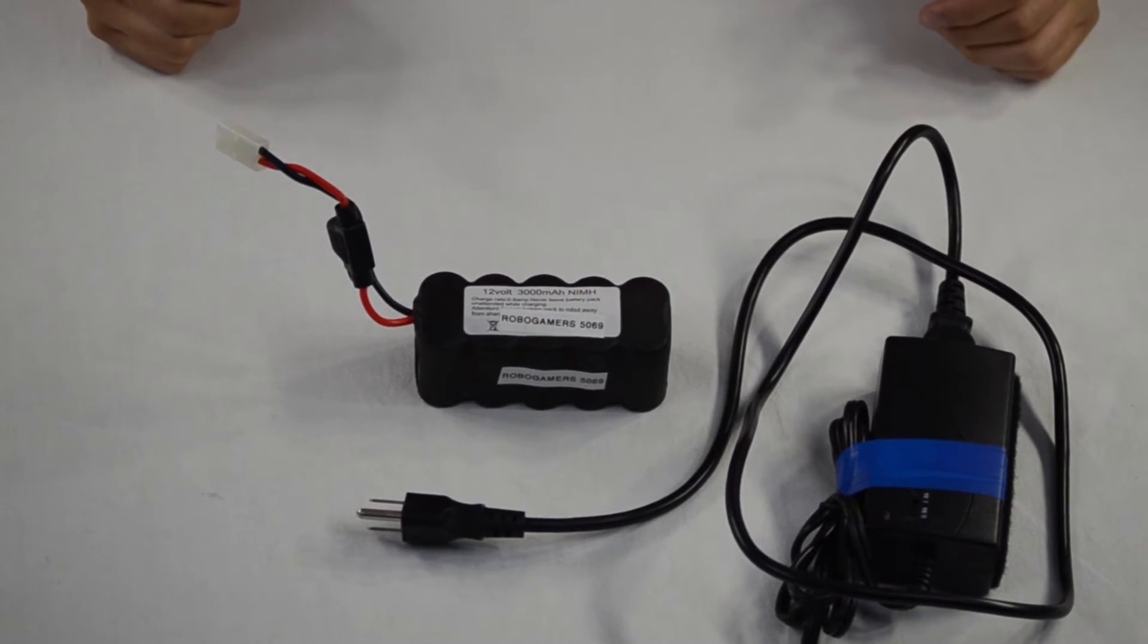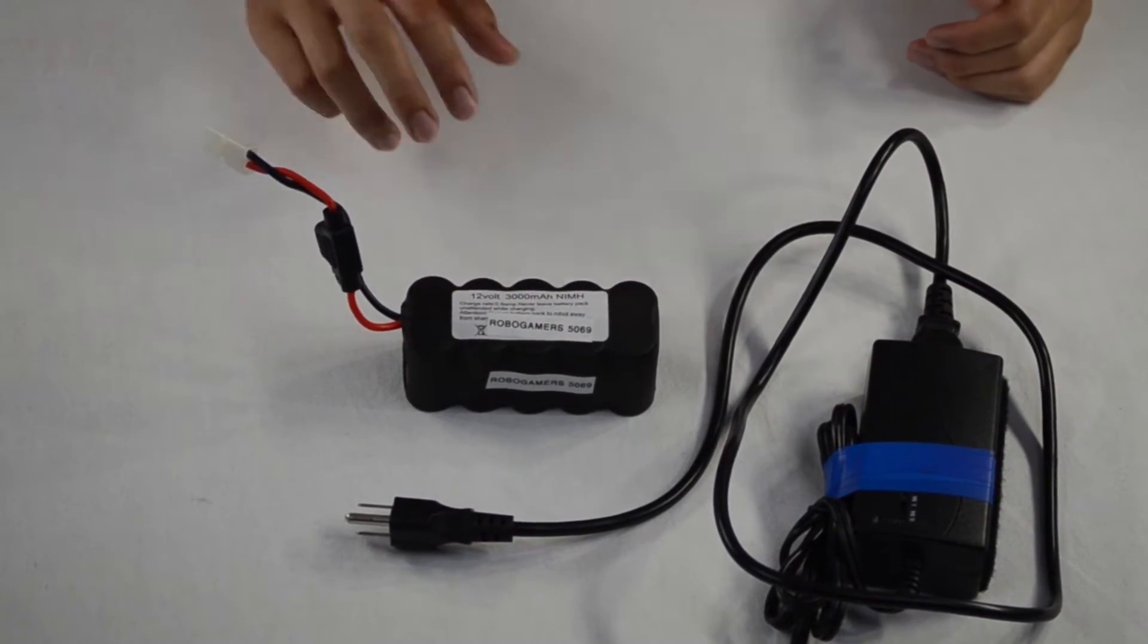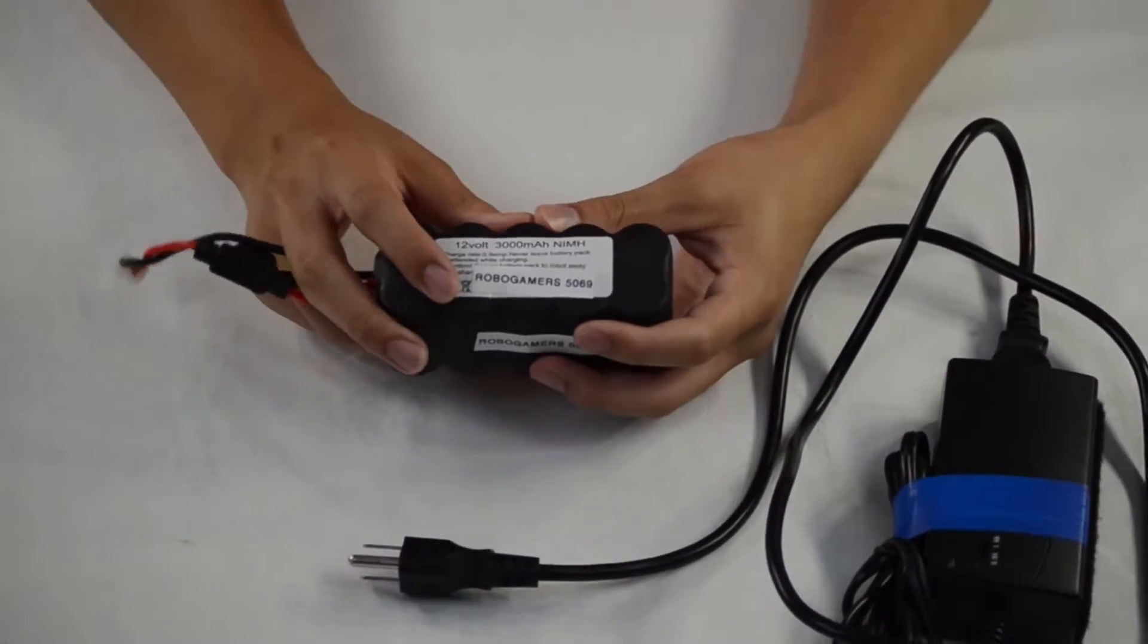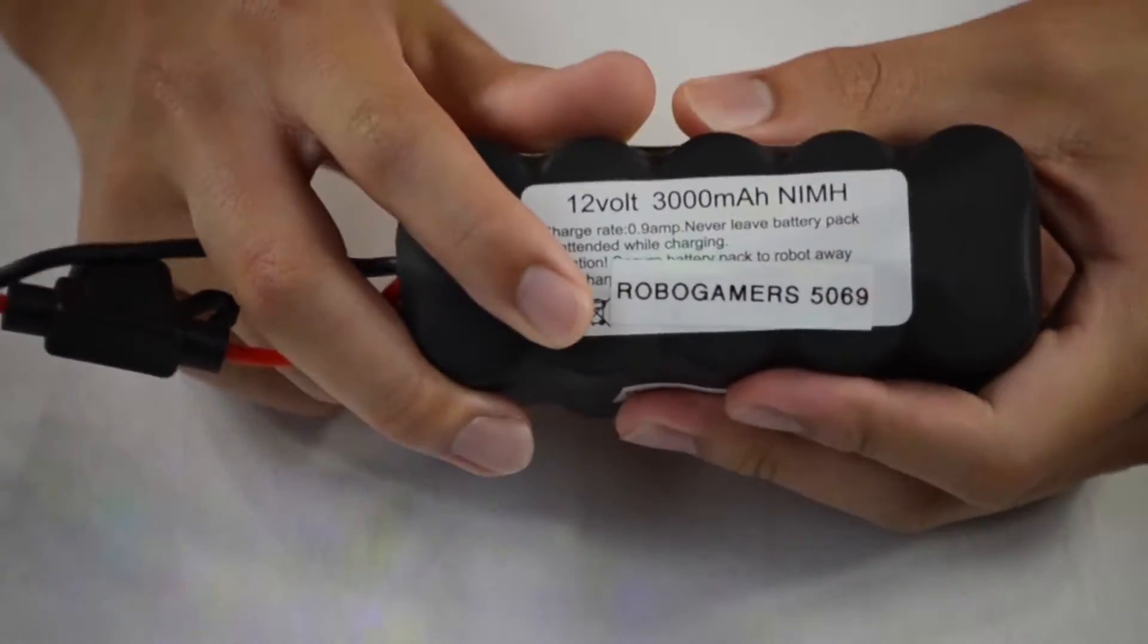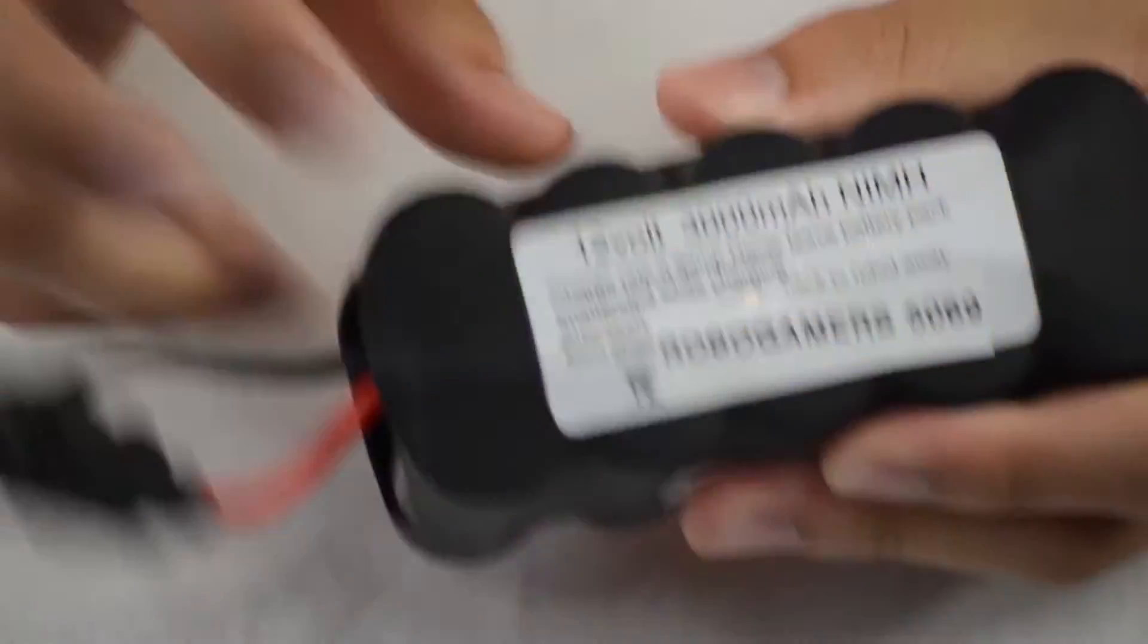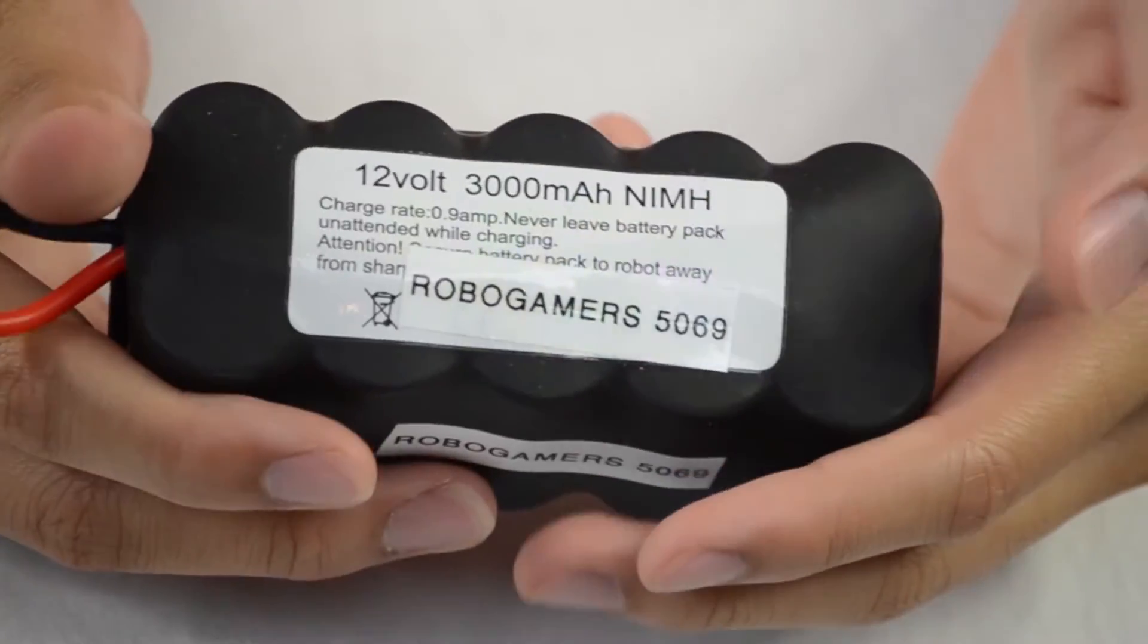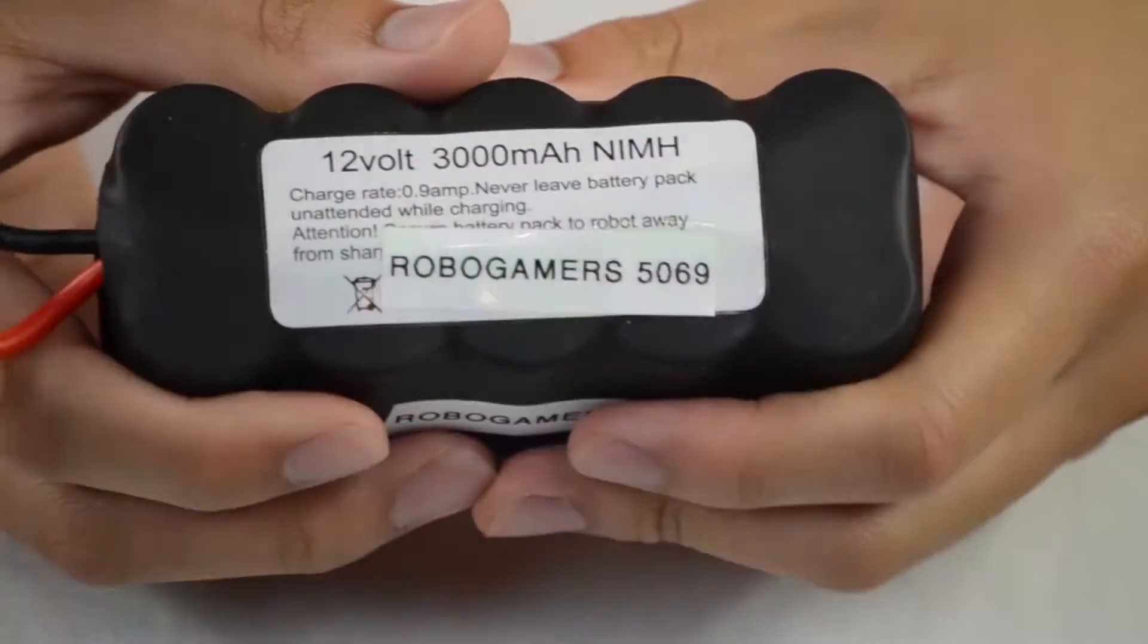Okay, so now we're going to go over the battery and battery charger. So basically, this is a 12-volt battery. Even though it says 12 volt, it does actually put out about 13 volts when it's fully charged. Always have an extra one at hand, an extra charged one at hand, so that you can swap it out on your robot if you feel that your robot's not performing as it could be.